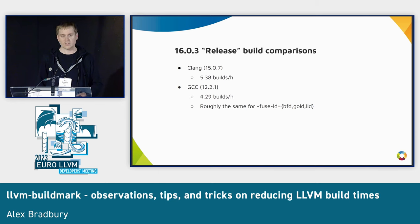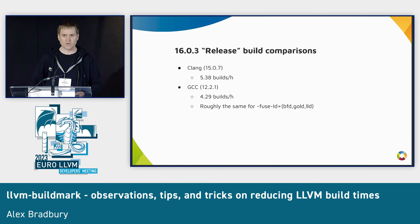A few other fun stats: we always like to compare ourselves to GCC, and it still is the case that Clang is a faster way to build Clang and LLVM. Building with recent distro packages gives about 5.4 versus 4.3 builds per hour for Clang versus GCC.